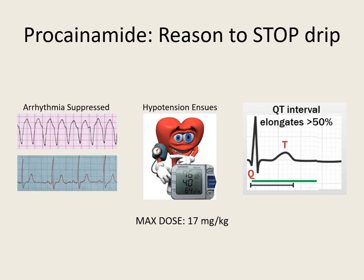Here are the four reasons to stop a procainamide drip. You suppress the rhythm — those mountains come back to normal sinus. The patient becomes hypotensive. Your QT interval — the start of the Q wave to the end of the T wave — if that elongates greater than 50%, we need to stop it or we'll stretch it into asystole. Or you reach that max dose of 17 mg per kg.